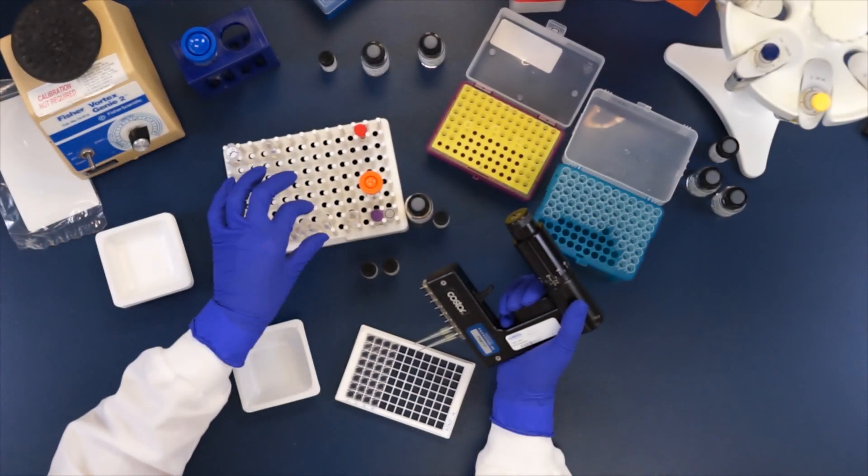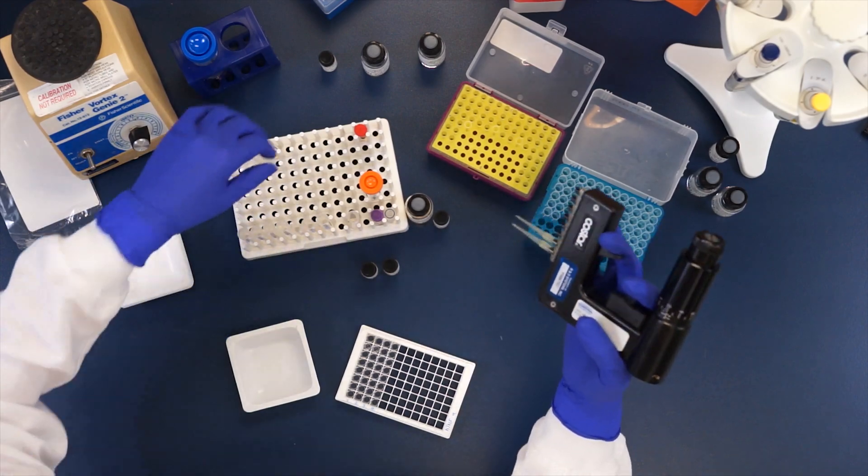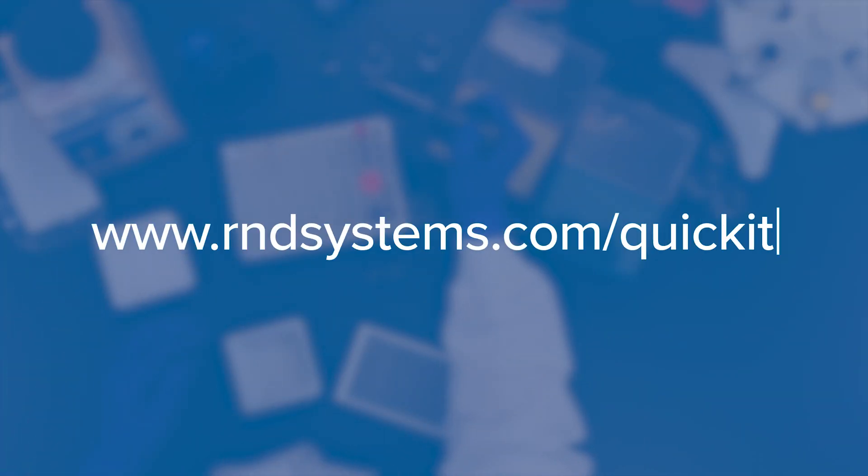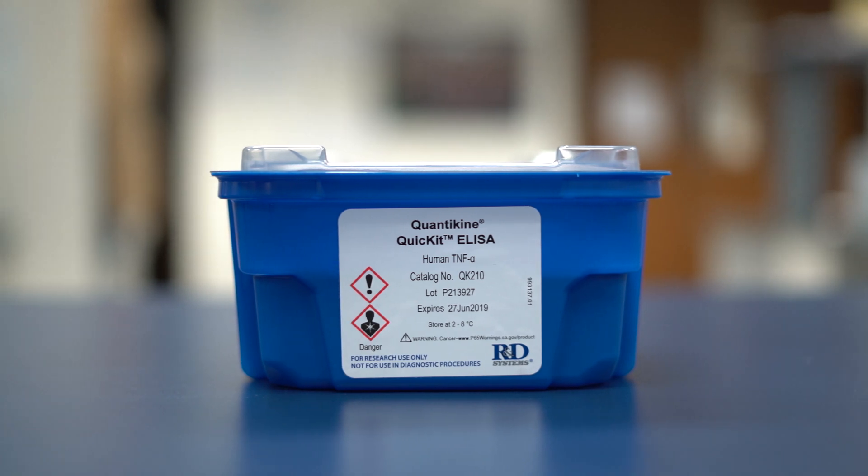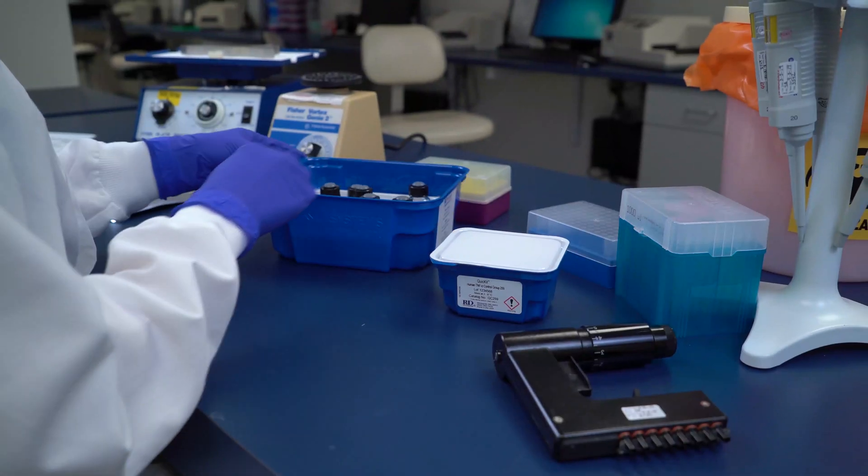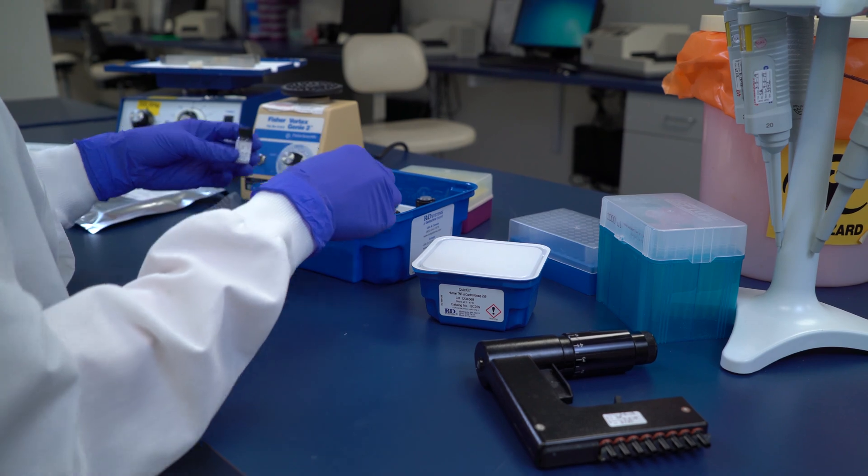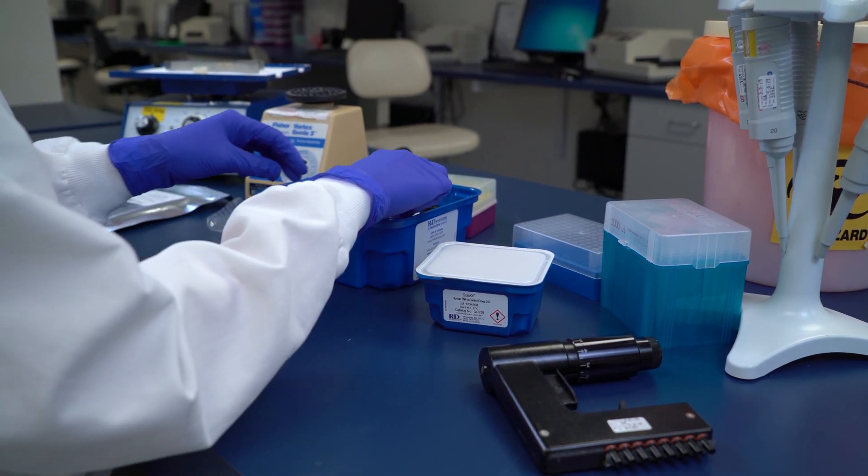QuickKit ELISAs use plates pre-coated with an anti-tag antibody. For more information on QuickKit ELISAs, visit rndsystems.com/quickkit. In this video, we're running a Human TNF-Alpha Quantikine QuickKit ELISA to determine Human TNF-Alpha concentrations in serum and cell culture supernates. This kit is for research use only and not for use in diagnostic procedures.